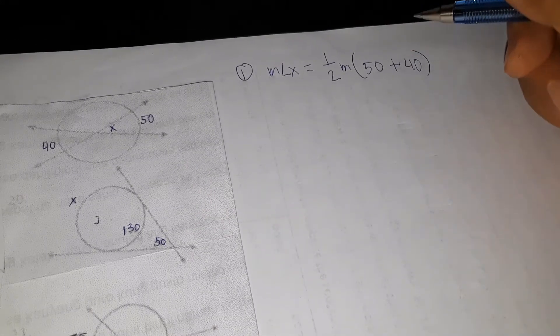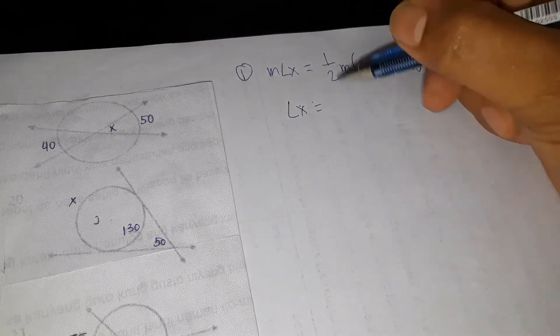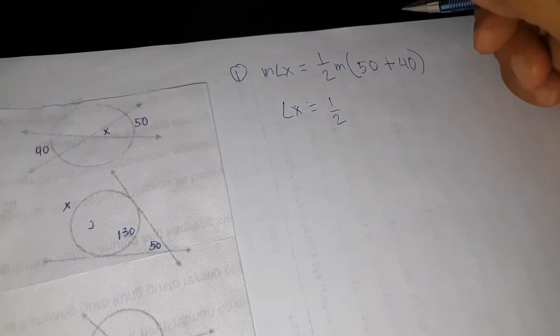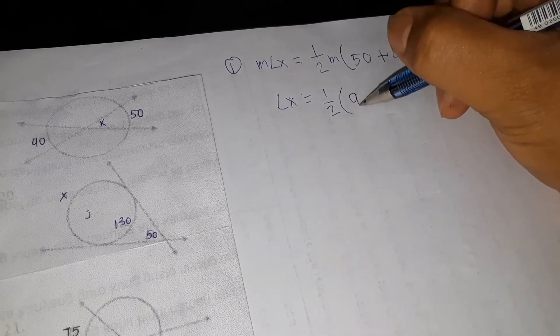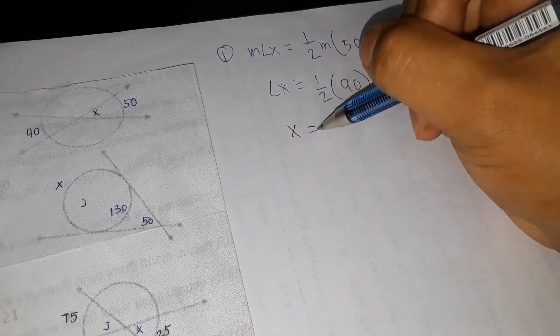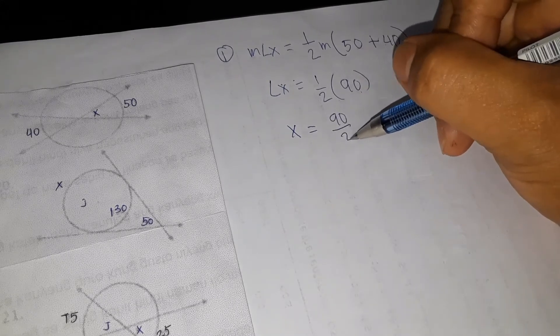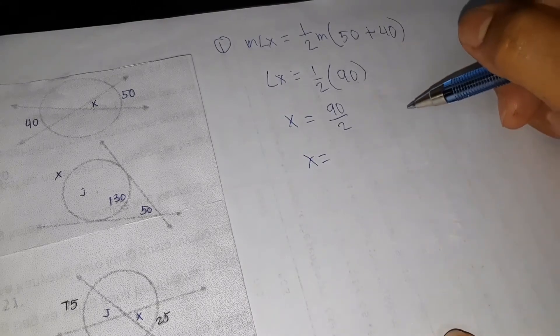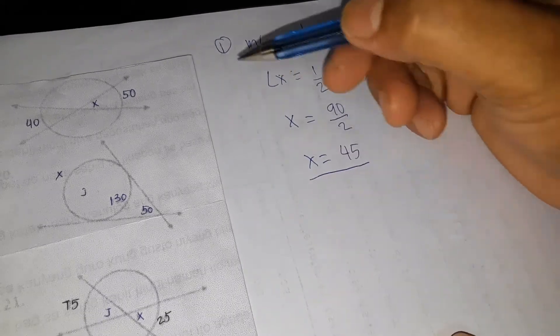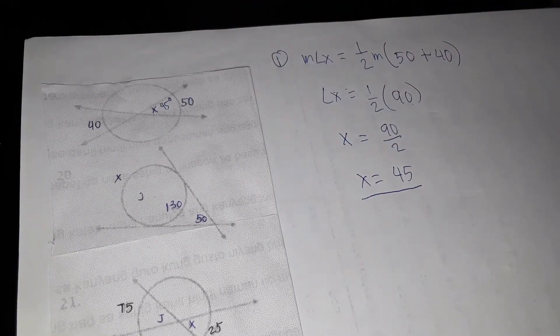Then, let's simplify. So angle X is equal to one half 50 plus 40. So angle X is equal to one half of 90 or 90 divided by 2. So we have 45. So angle X is equal to 45 degrees.